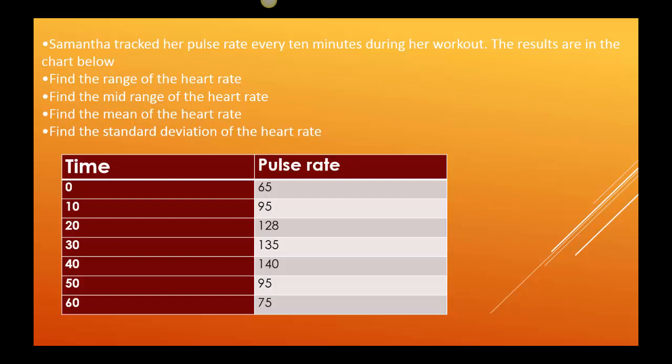So we're saying when she started, time zero, her pulse rate was 65. 10 minutes into the workout, it's up to 95. 20 minutes, it's at 128. At 30 minutes, it's at 135. At 40 minutes, it's at 140. At 50 minutes, it's just 95. And at 60 minutes, it's back down to 75. So let's start with the range.